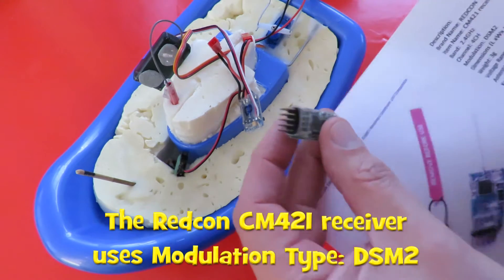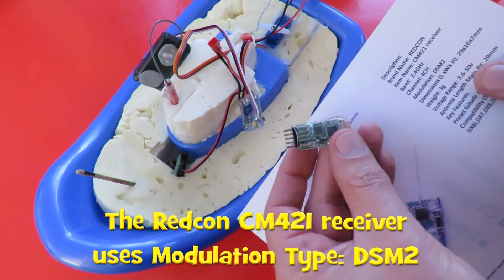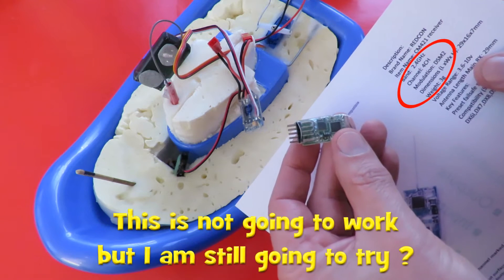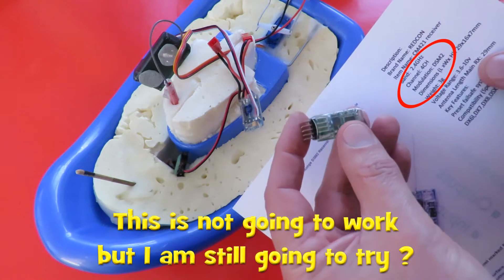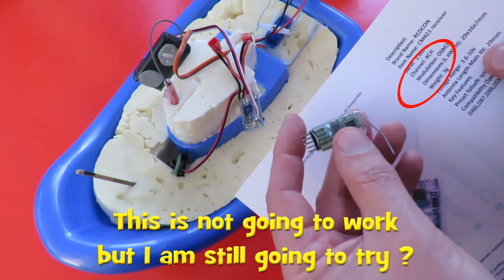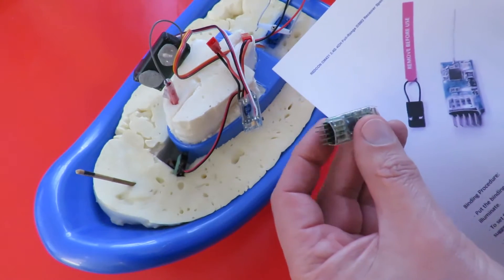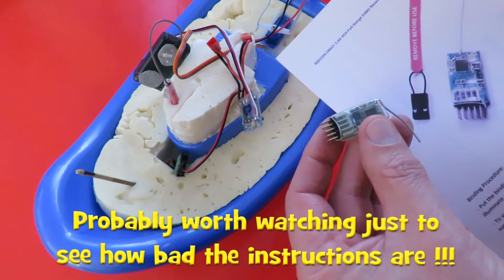It's a Redcon CM421 receiver, four channels. Got it from Banggood and it was cheap, it was three pounds something I think. It's a bit of an impulse buy, I thought I'd just give it a try see if I can get it to work.